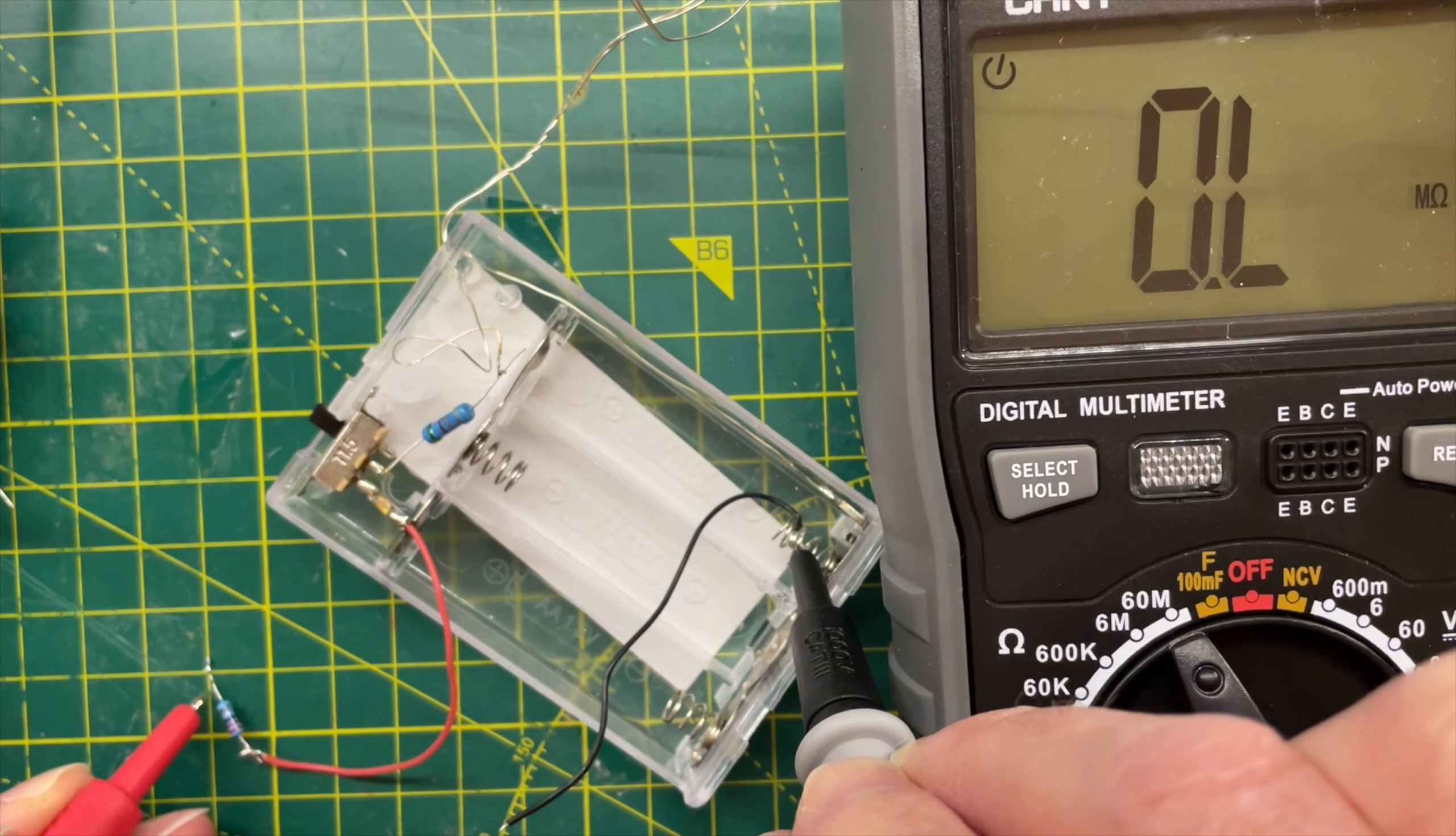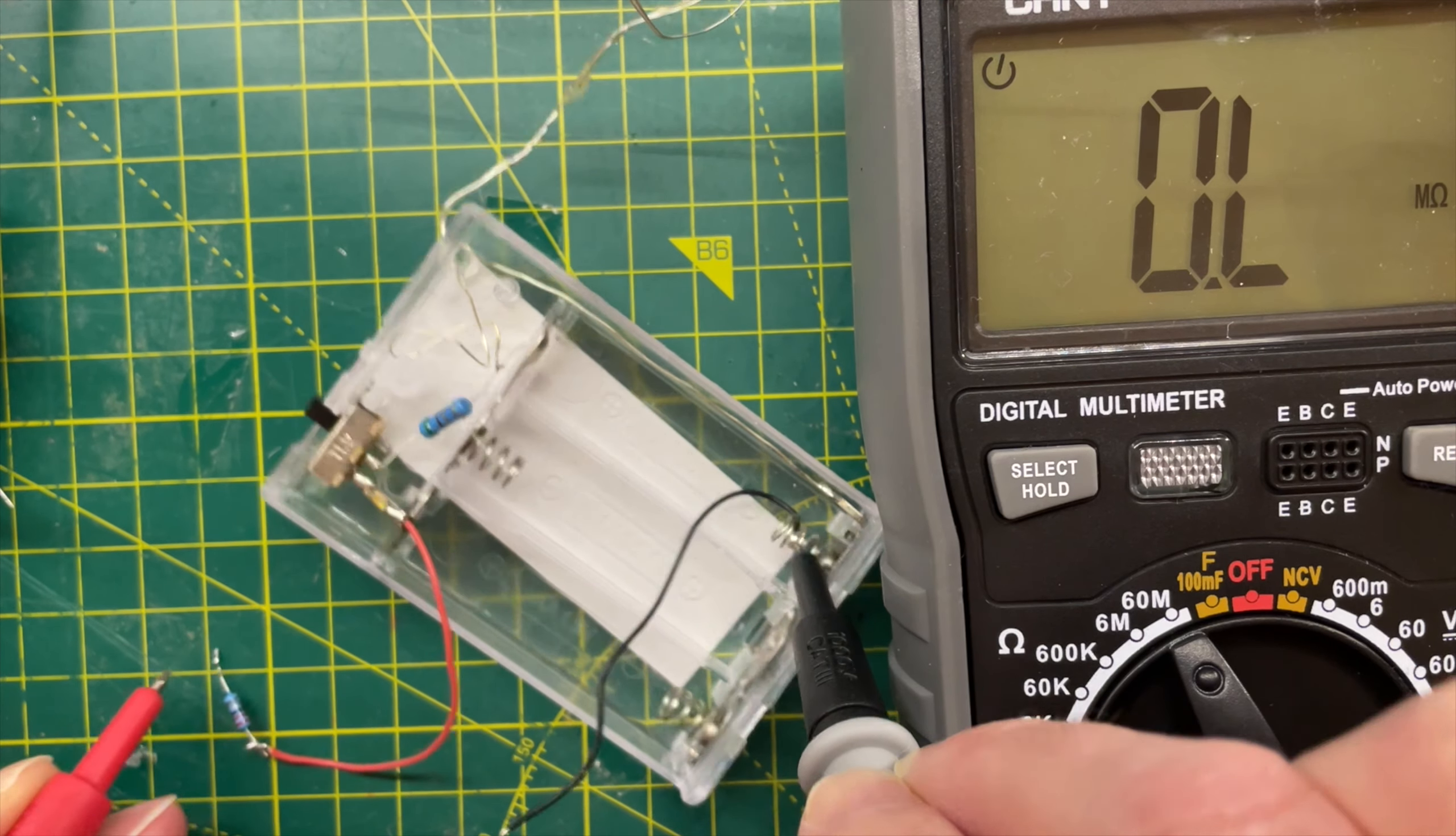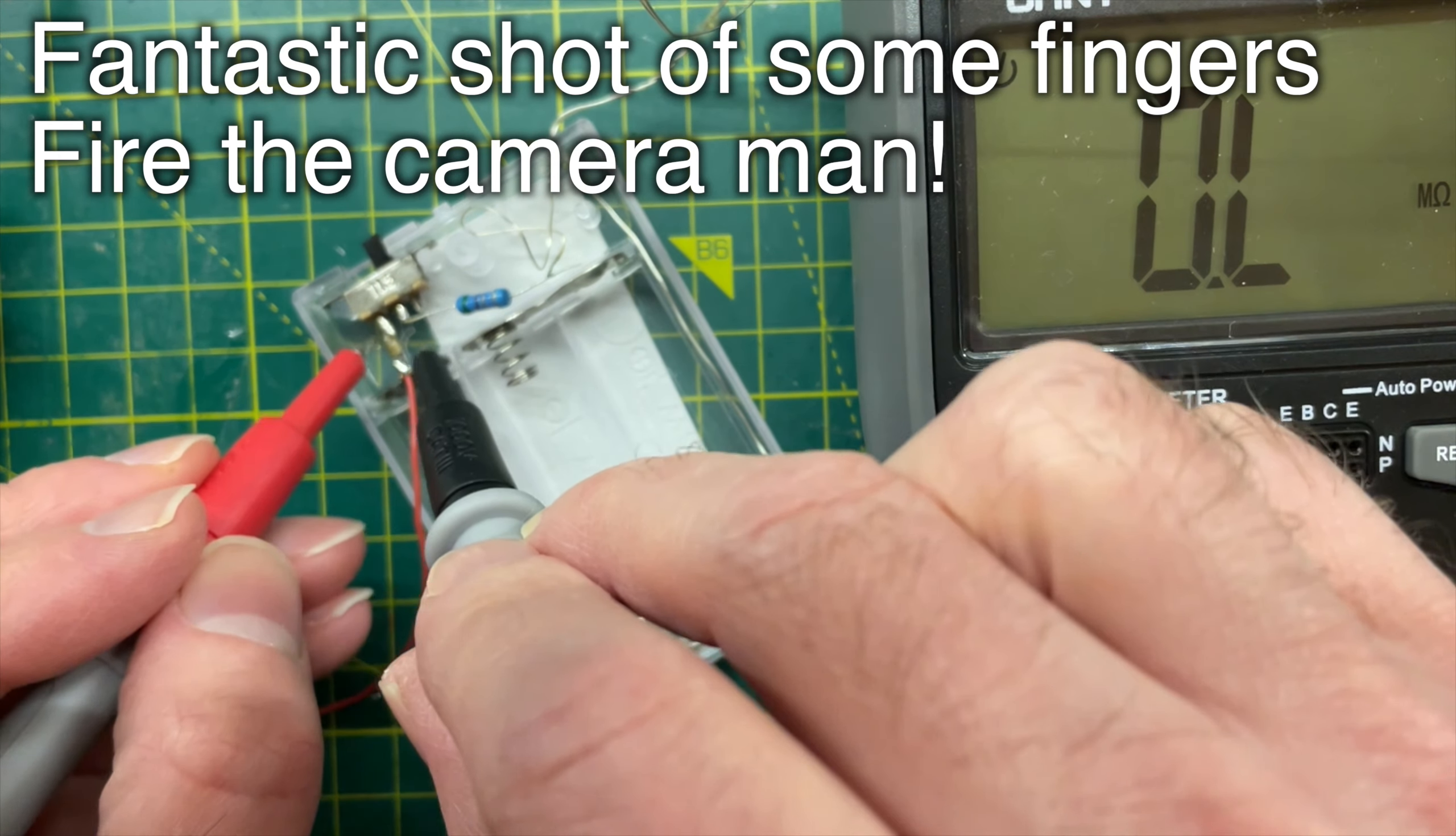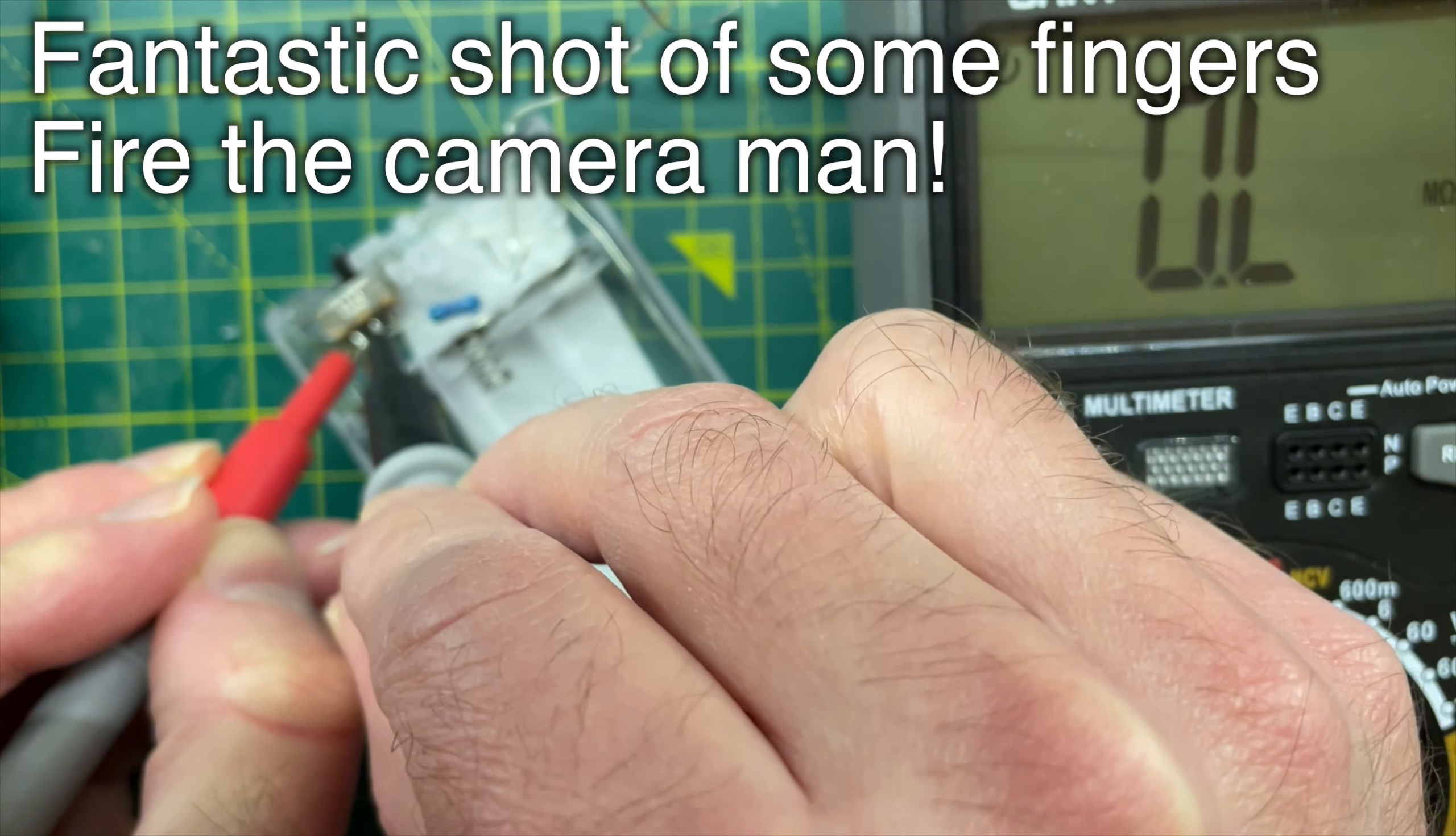So I started to suspect there might be an issue with the wiring. Maybe the switch was broken or there was some other issue. So I stripped off the connections to the lights. Then I checked the switch. There's nothing wrong with it. It's turning off and on properly.